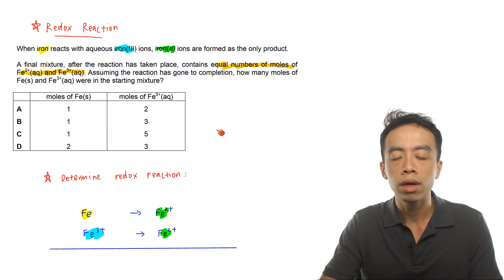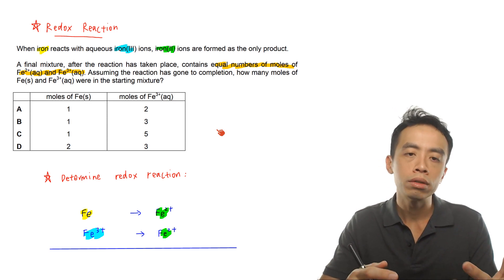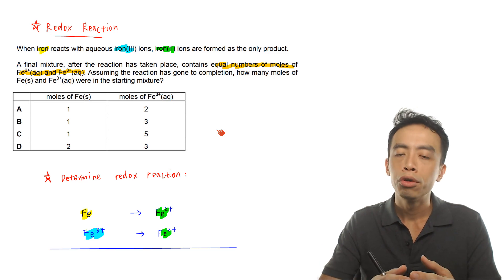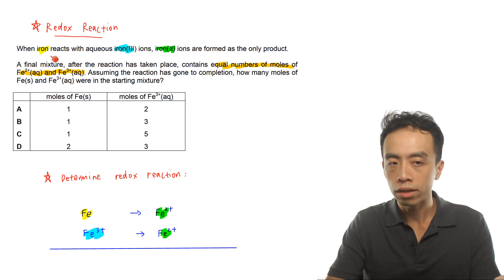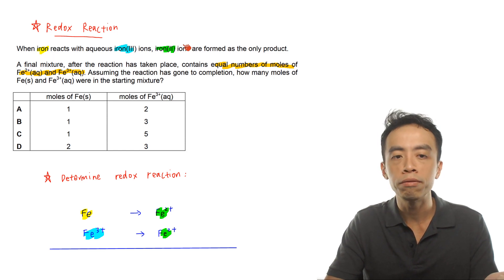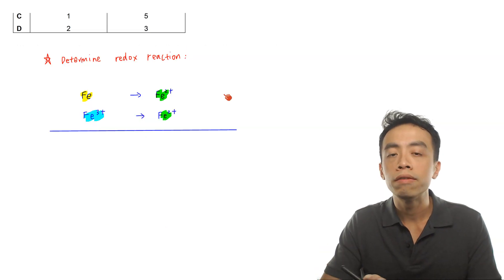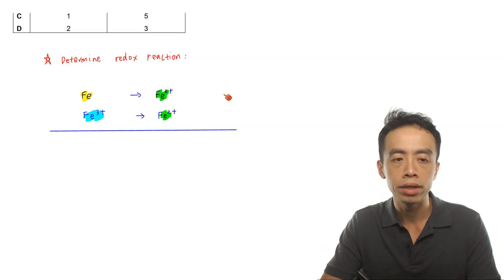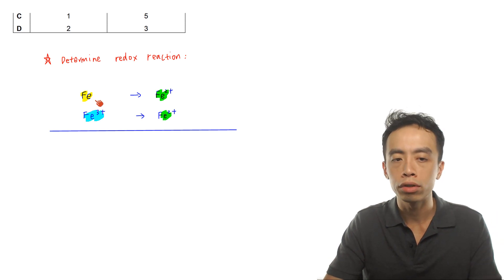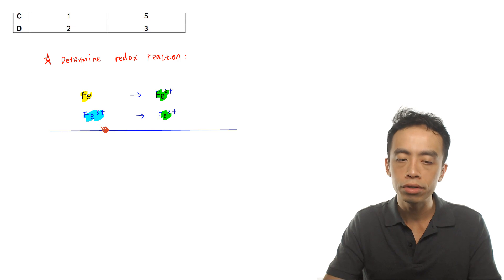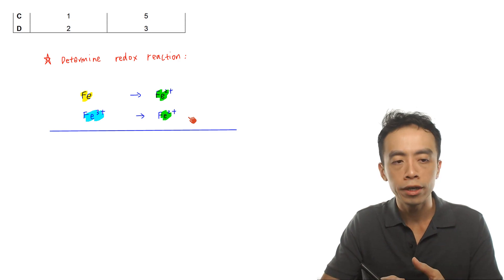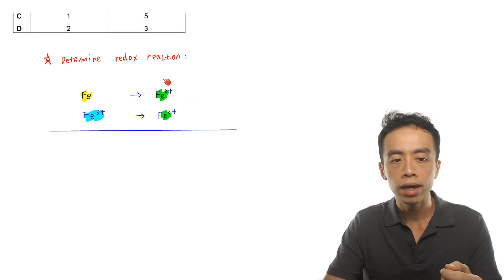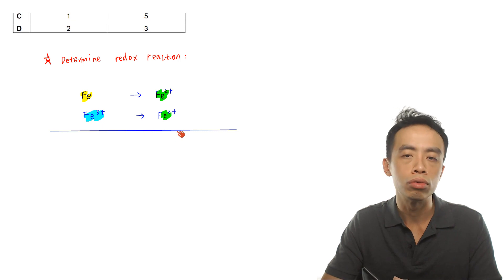The first thing we need to handle is to determine the overall redox reaction. We need the overall balanced equation so that we can compare mole ratios. The reaction is between iron metal and iron 3+ ions to give iron 2+ ions. Iron metal will be oxidized to iron 2+, and iron 3+ ions will be reduced to iron 2+. So iron will be oxidized to iron 2+ and iron 3+ will be reduced to iron 2+.